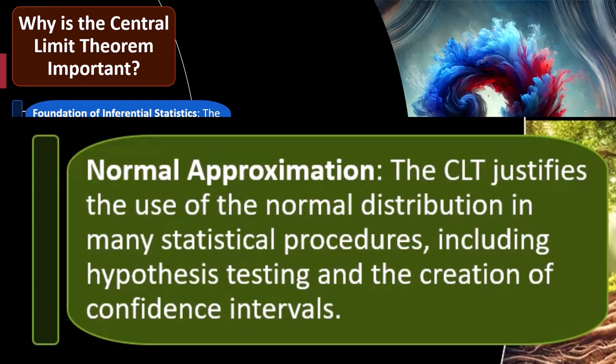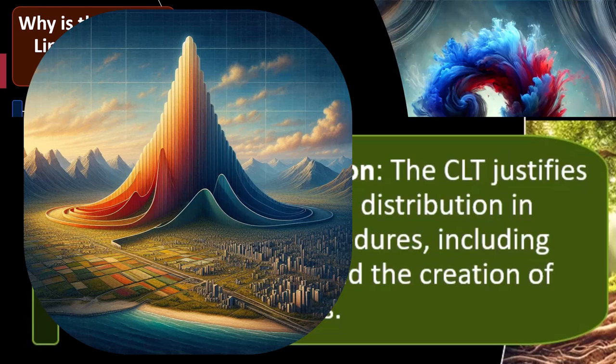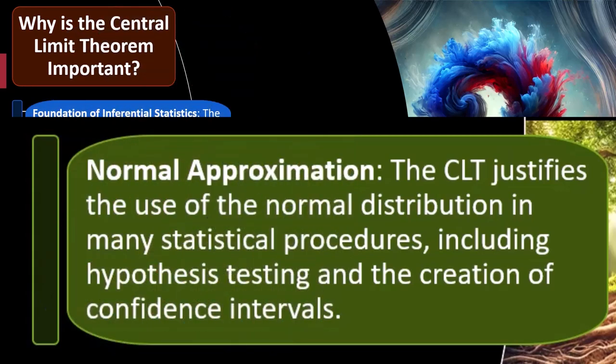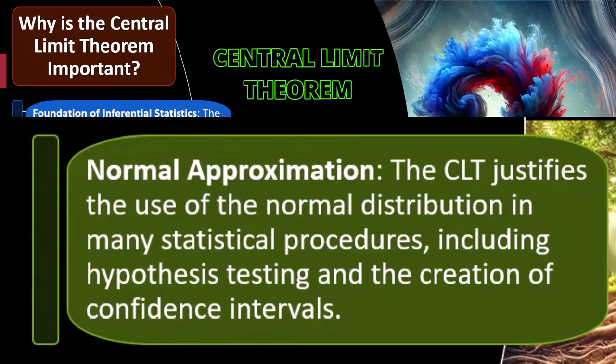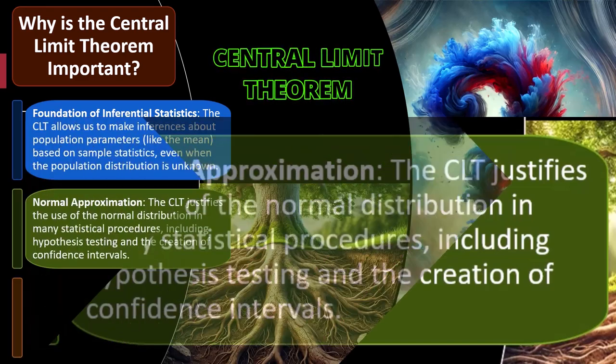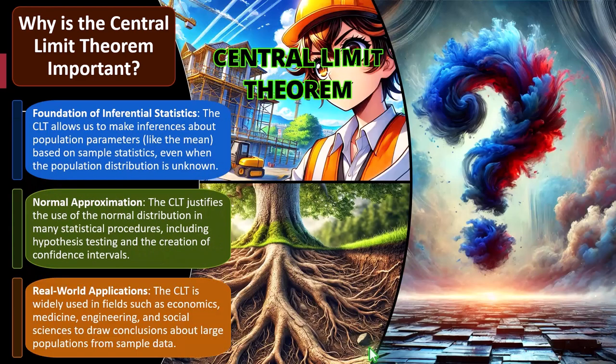Not all data sets are going to have a bell shape. Some approximate a bell shape, but many do not. The idea with the Central Limit Theorem is that even if we have data that does not approximate a bell-shaped curve — skewed to the left, skewed to the right, or with a uniform distribution — because of the Central Limit Theorem, we might still be able to utilize the concepts of a bell-shaped curve with that type of data, which is quite practical and useful in real-world application.